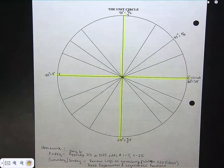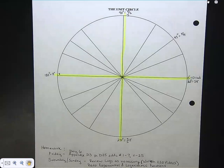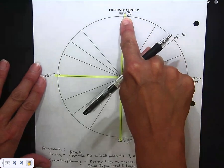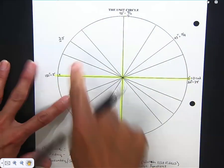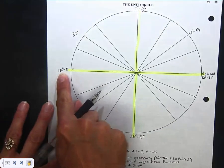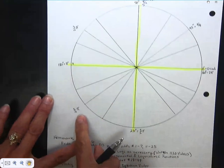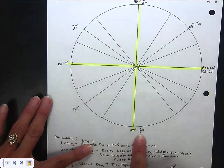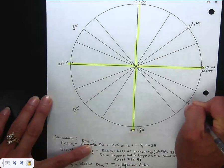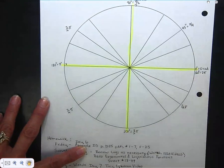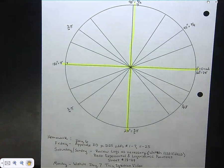You'll get good at counting by quarter pis. Going around the circle: pi/4, 2π/4 (equals π/2), 3π/4, 4π/4 (equals π), 5π/4, 6π/4 (equals 3π/2), 7π/4, 8π/4 (equals 2π). These correspond to 45-degree increments all the way around.